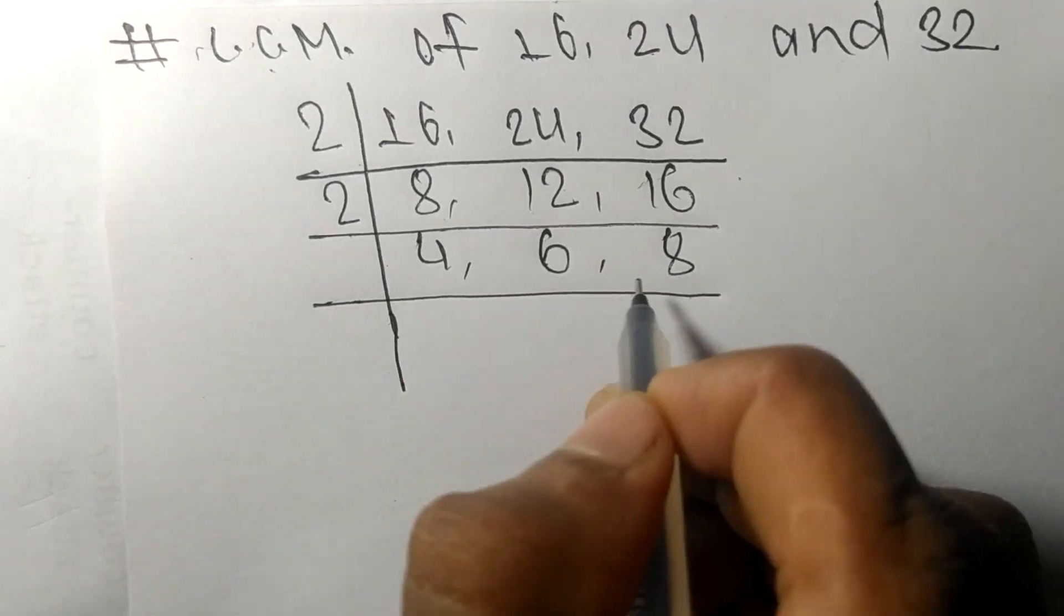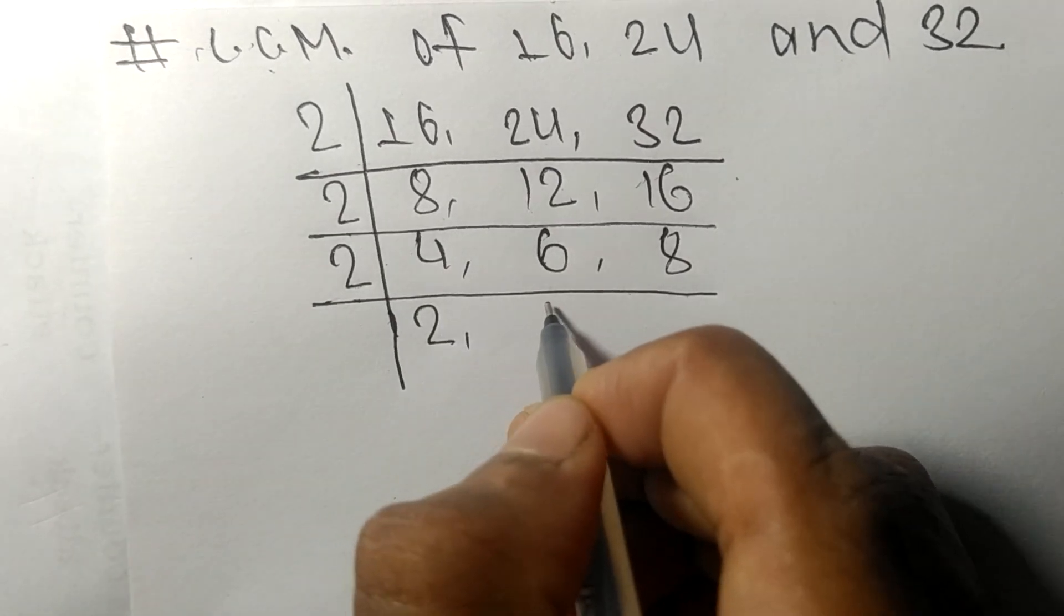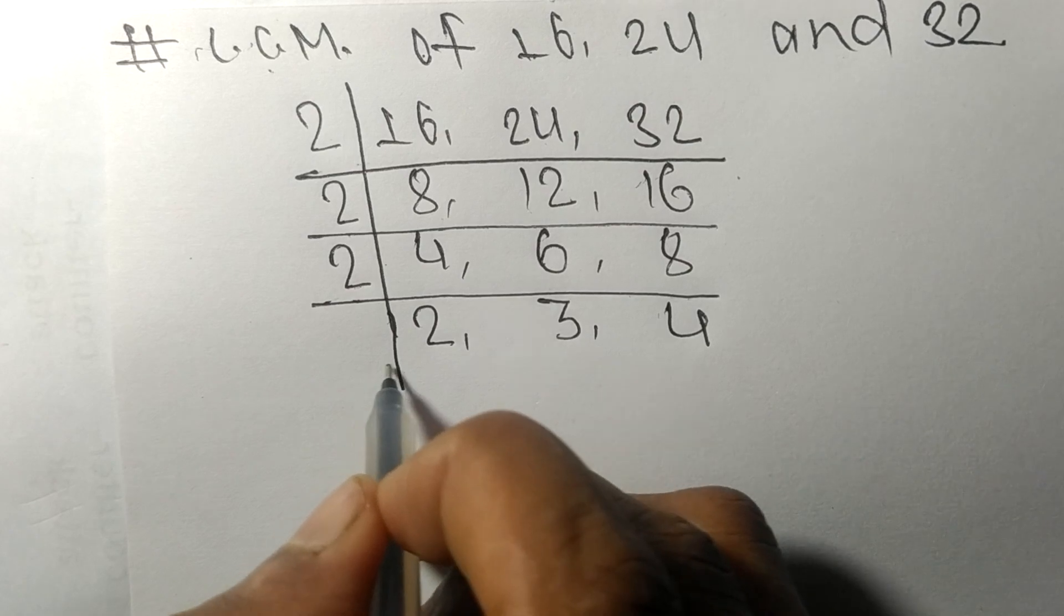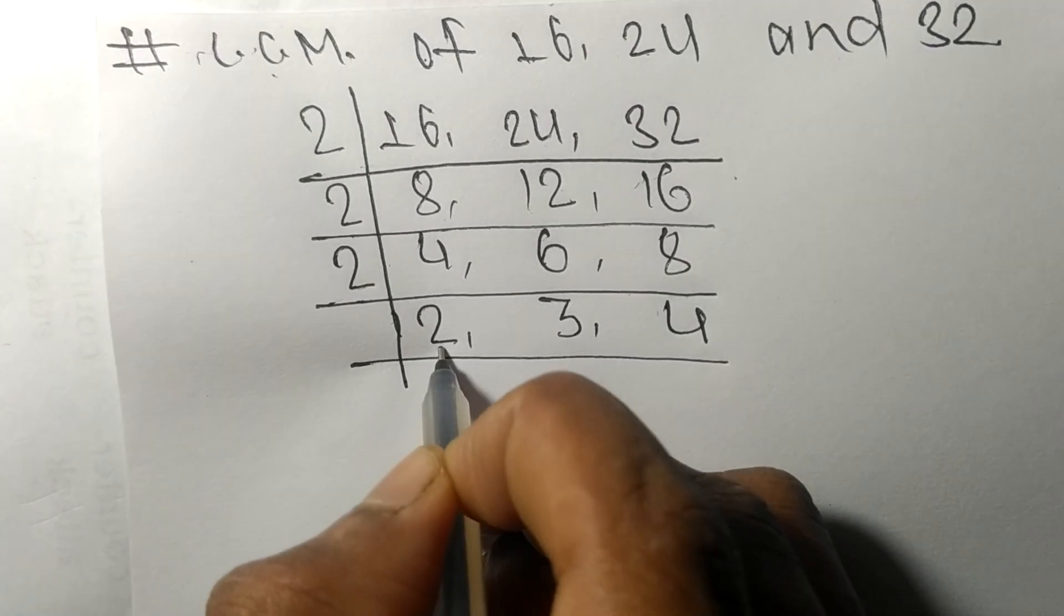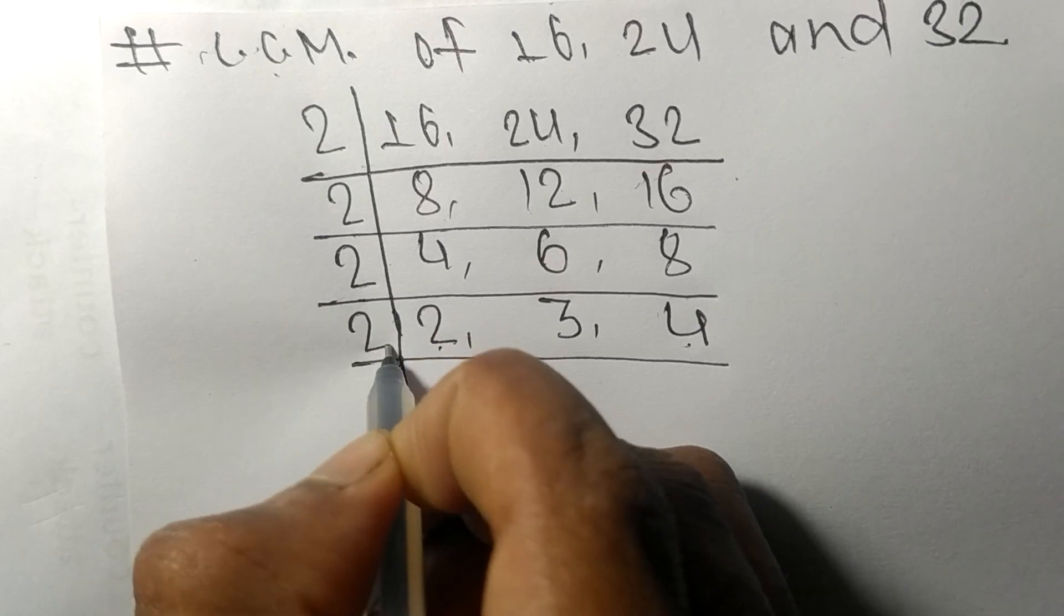Again it is divisible by 2. 2 times 2 is 4, 2 times 3 is 6, 2 times 4 is 8. Now this 2 and 4 are exactly divisible by 2.